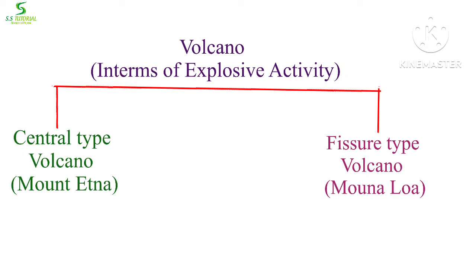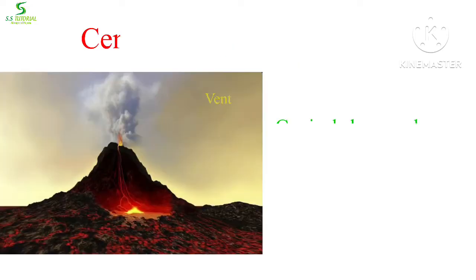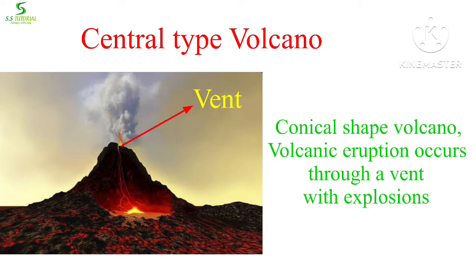In terms of explosive activity, there are two types of volcano: central type and fissure type. Central type volcano is nothing but a conical hill or mountain having a vent or crater through which molten rocks, rock fragments, hot vapor, and gas are erupted from the earth's crust with an explosion.